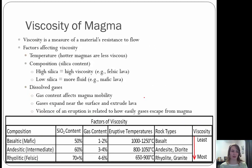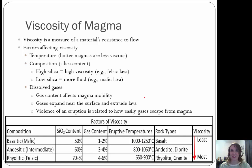Viscosity of magma — viscosity is a measure of a material's resistance to flow. Some factors that affect viscosity are temperature: hotter magmas are less viscous, which means they flow more. Composition — by composition we mean silica content. High silica means high viscosity, which means it doesn't flow. Low silica is more fluidal — that's mafic lavas.